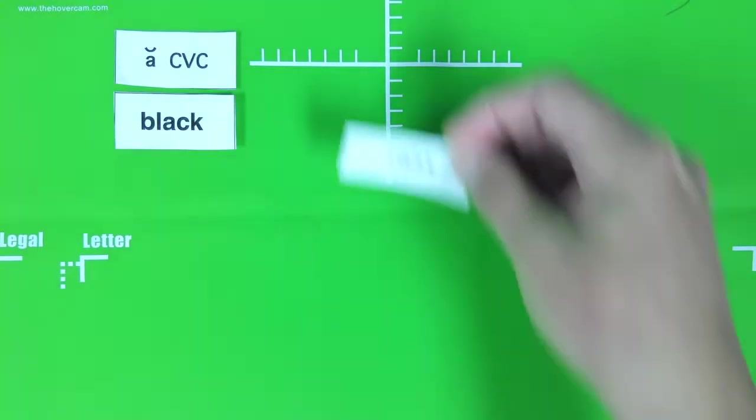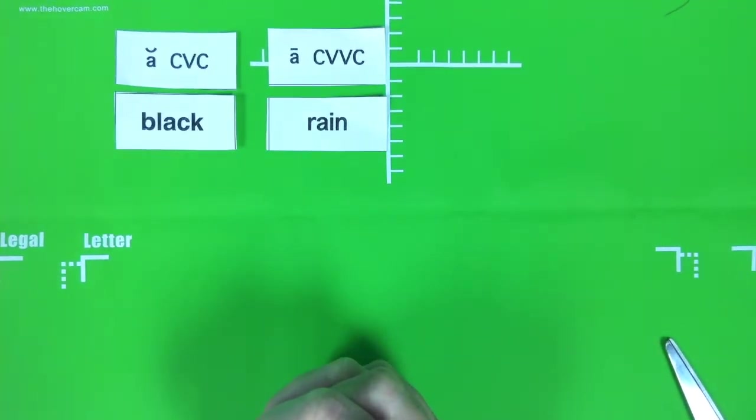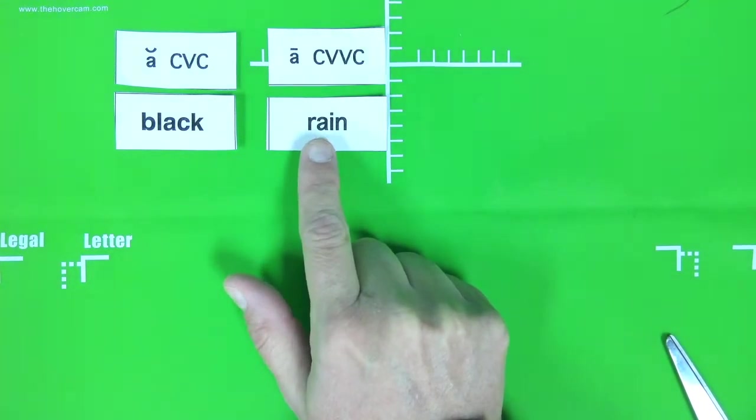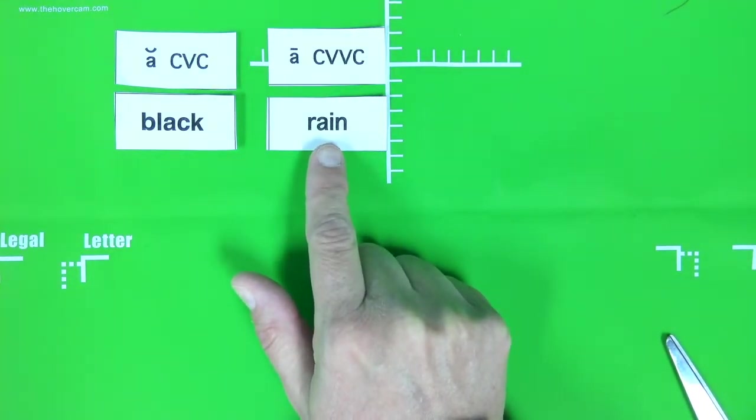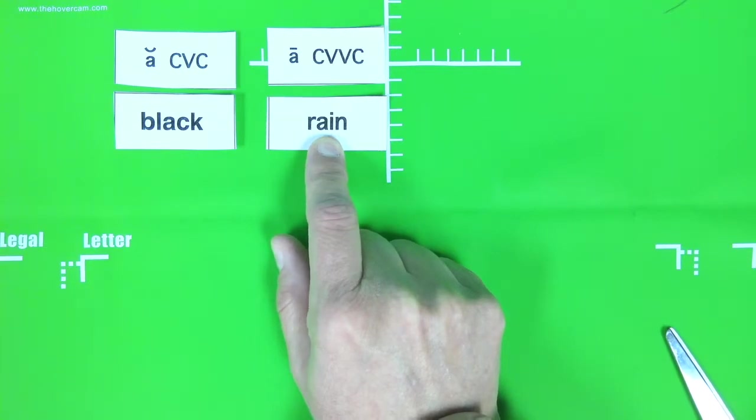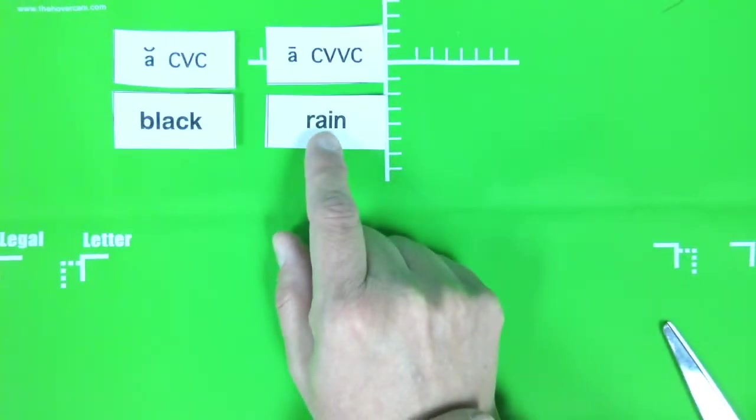Next we have rain. The A in rain says A. And the reason that it does is because it is a consonant, vowel, vowel, consonant word. In the middle here you can see that there is an A and an I. Both of them are vowels. And when two vowels are together, the first one always says its name, which is the long A sound. Just remember this: when two vowels go walking, the first one does the talking. A.